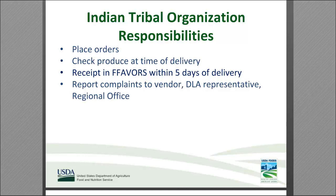ITOs and state agencies are responsible for placing orders in FAVORS for the correct delivery days. ITOs must inspect the produce at the time of delivery and document on the delivery sheet any shortages or rejected items for poor quality. The ITO should contact their DLA service representative and the vendor within one business day about quality, condition, or delivery issues. Quantity discrepancies should be noted prior to acceptance and recorded on the signed delivery sheet. Complaints should be reported to the vendor, DLA service representative, and the FNS regional office. If issues persist, contact the USDA Foods Complaint Team. ITOs must also go into FAVORS and accurately receipt within five days from delivery so the vendor can be paid.